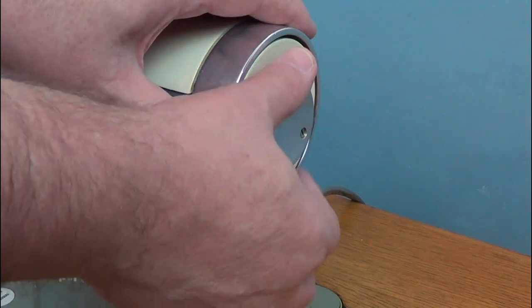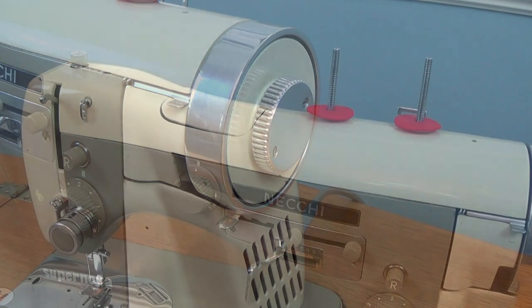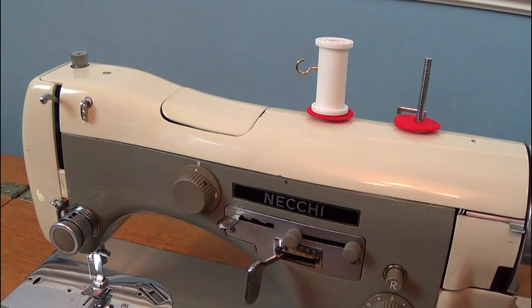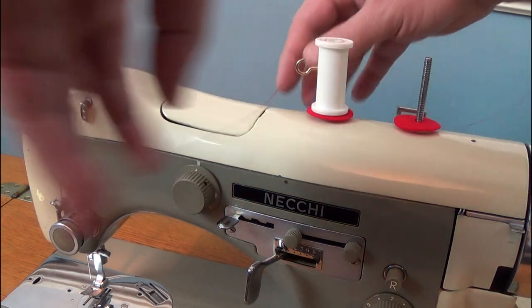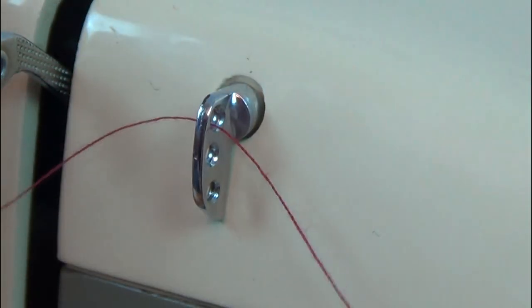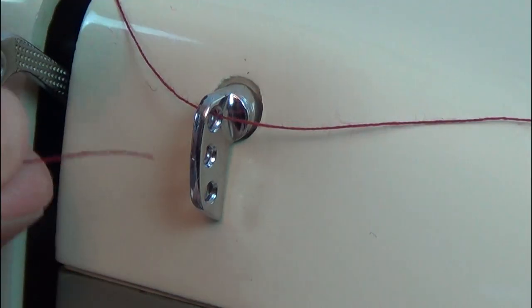To wind a bobbin, release the clutch knob. I'm using cross wound thread, so I'm using my homemade thread stand. The thread goes through the front thread guide, and then back again.